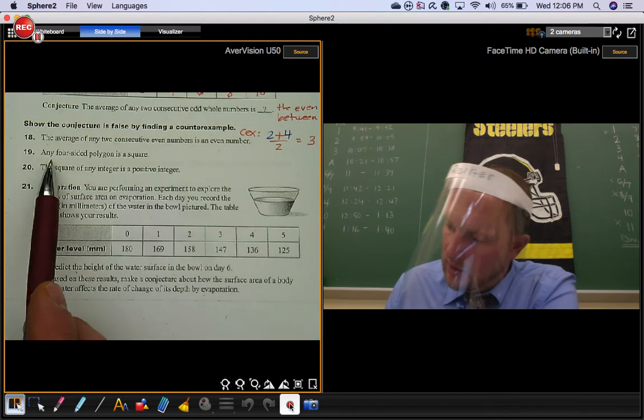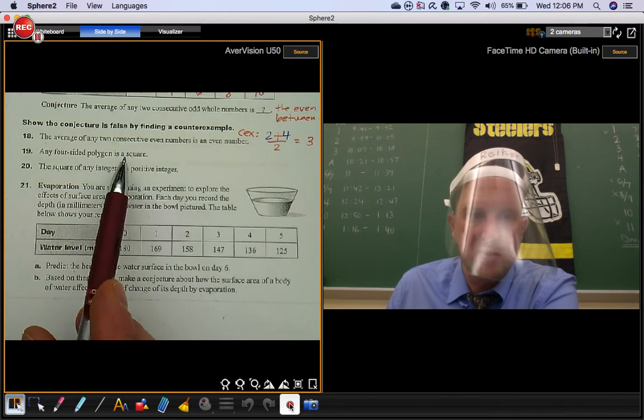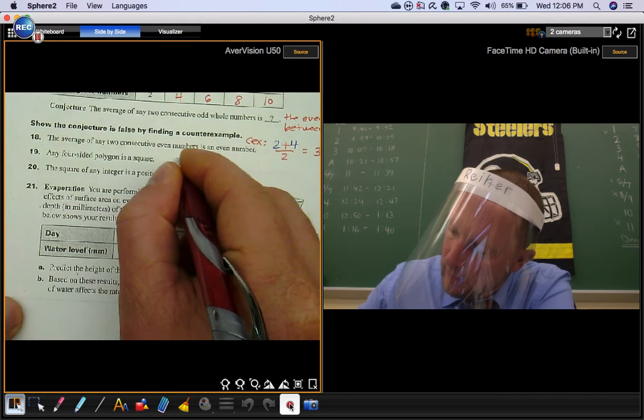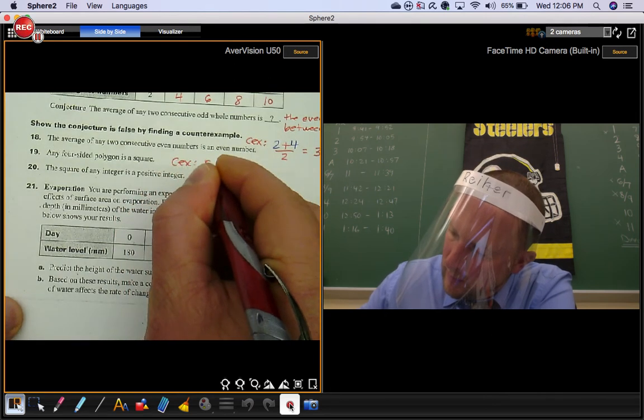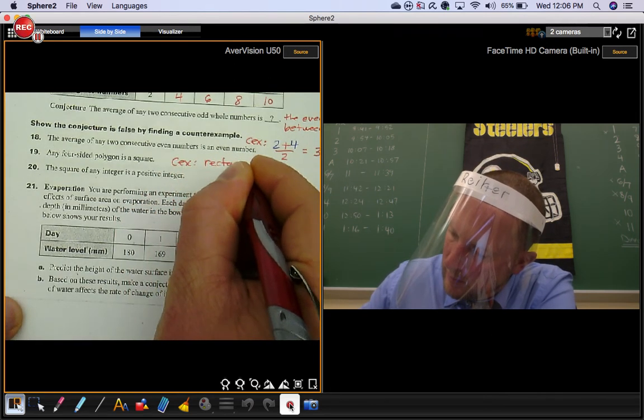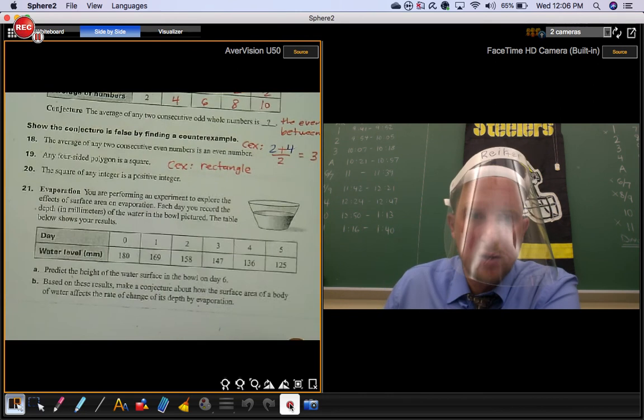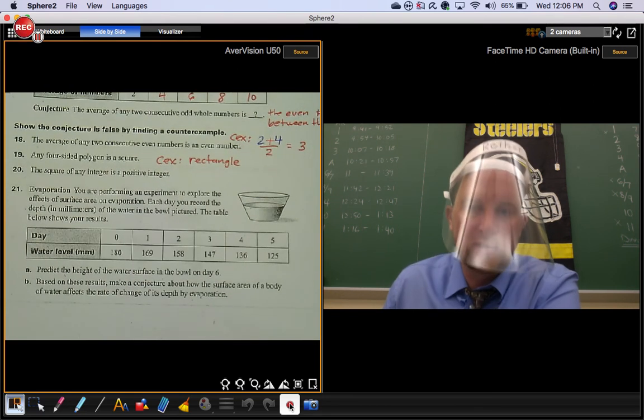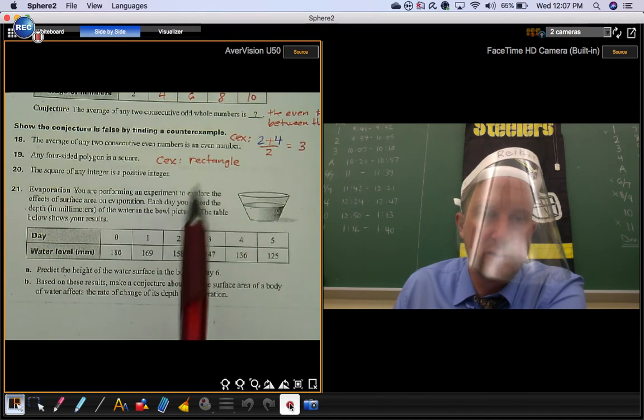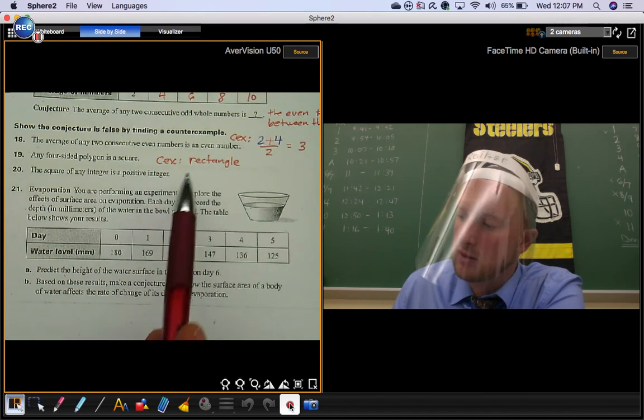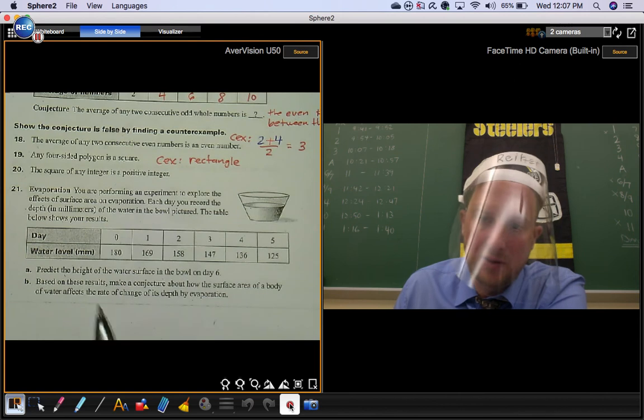Number 19. Any four-sided polygon is a square. If you pick a standard rectangle, it's longer than it is wide. That's not a square. Rectangles have four sides, and they're not squares.